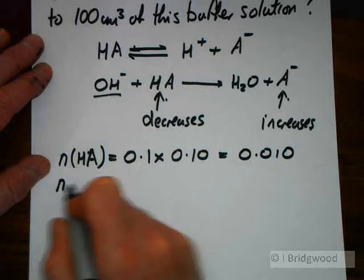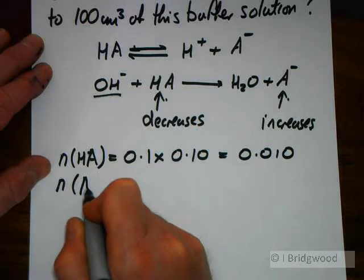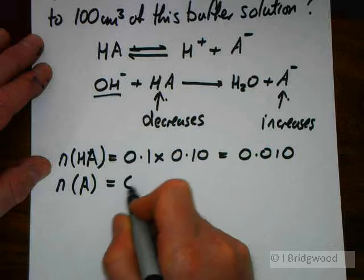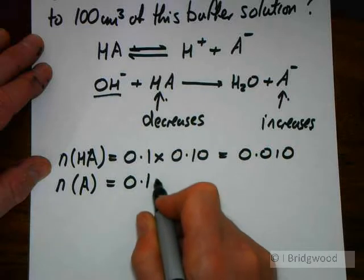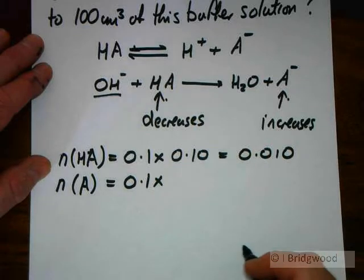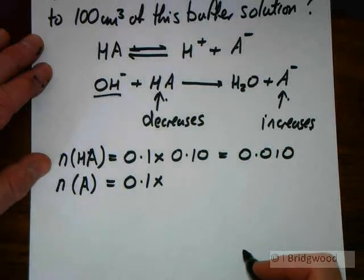The number of moles of our A⁻ in the buffer solution. Again, we're taking 100 cubic centimeters. But the concentration of the sodium ethanoate was 0.25.